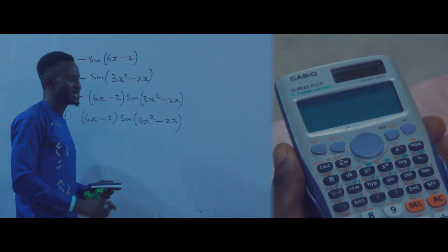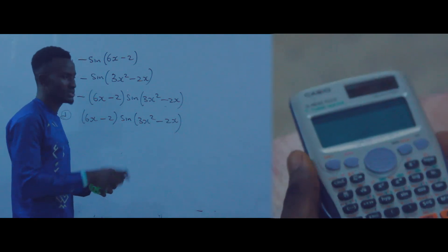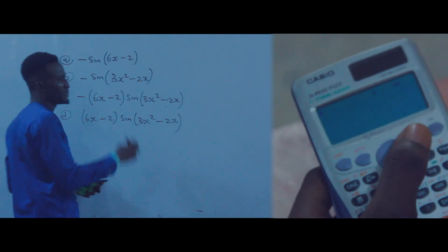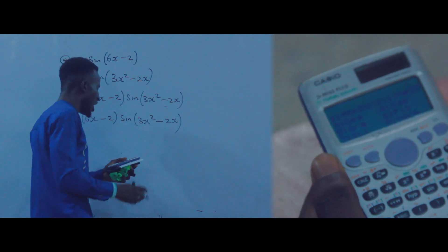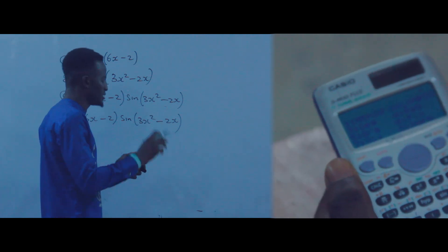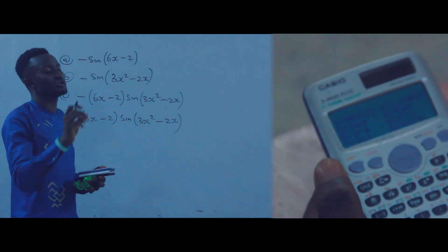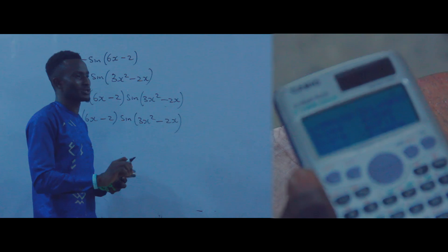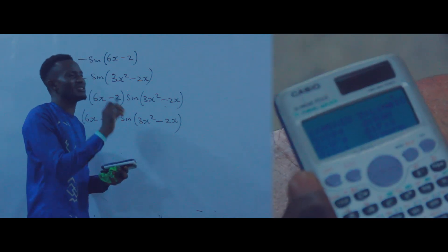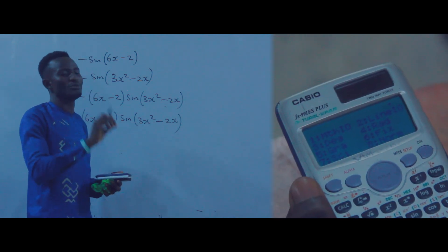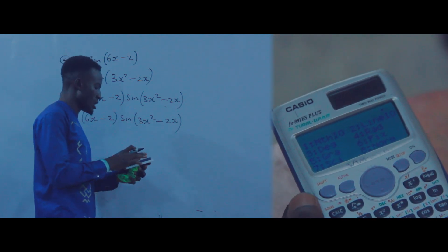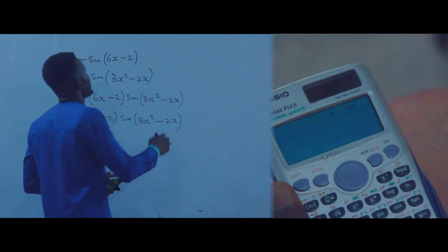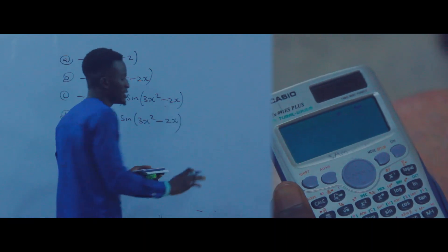When you press Shift and Mode, you will observe number three is degree — that is what we used in the last class. You will not press that for this question. Notice that number four is radian. You have to take your calculator to radian mode, so press number four. When you press number four, your calculator is already in radian mode.